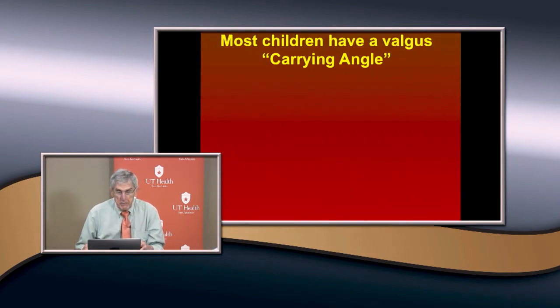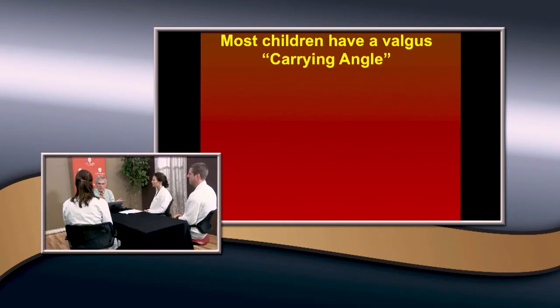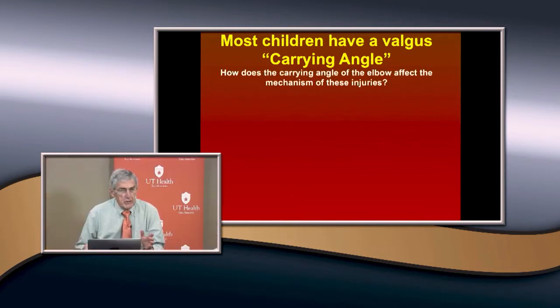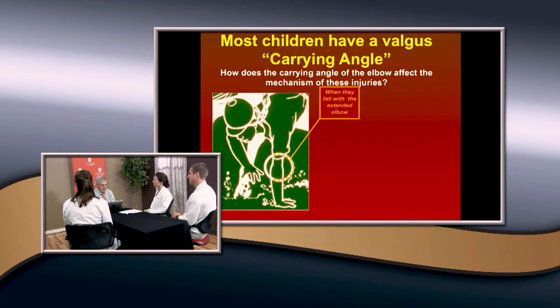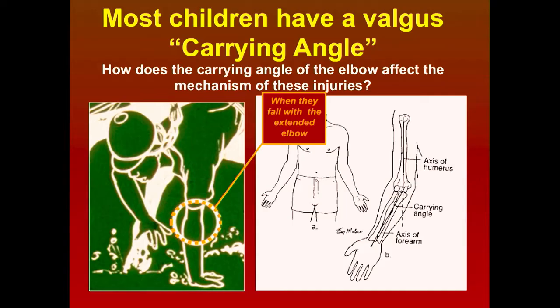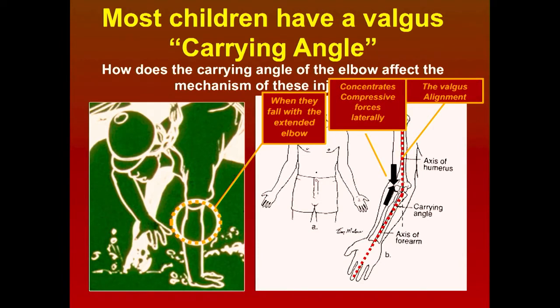Most children have a valgus carrying angle of about 15 degrees on average. When they fall on the extended elbow with this valgus alignment, it concentrates compressive forces laterally — stressing the radiocapitellar joint. Most of these fractures are failure in compression.